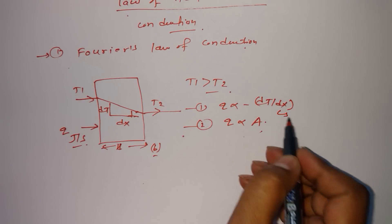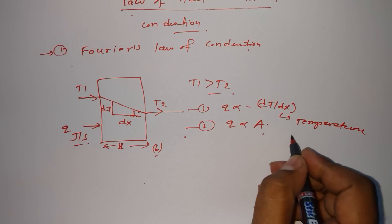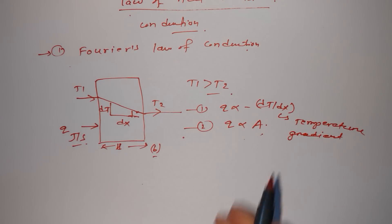Now what is dT upon dx? This is known as the temperature gradient.